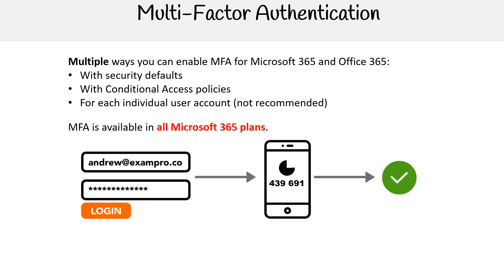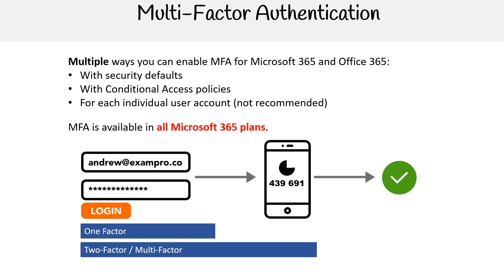Here is an example where you see my email and my password — that is called one factor, confirming your identity in one case. Then you have the second factor, also known as multi-factor. In this case, we are sent a verification code to our phone to confirm, and that's going to let us get into the system. So that's MFA.